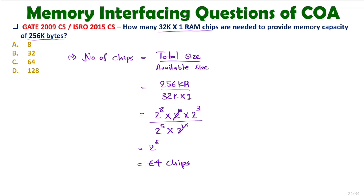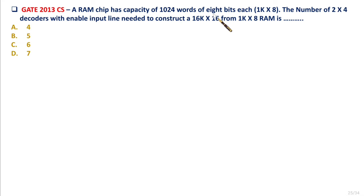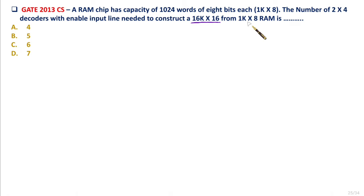Now the second question: a RAM chip has capacity of 1024 words of 8 bits each, i.e., 1k×8. The number of 2×4 decoders with enable input lines needed to construct 16k×16 memory from 1k×8 RAM chips is how many? We need to build 16k×16 RAM using 1k×8 chips, and then decode all those chips using 2×4 decoders. First we need to identify how many chips are required.